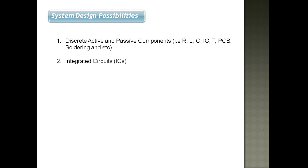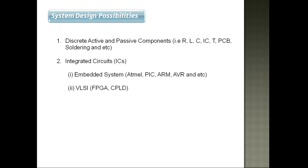In integrated circuits, we have three classifications: the first choice is embedded systems, the second is VLSI-based applications, and within VLSI we have two choices - either FPGA-based applications or CPLD/ASIC-based applications. ASIC means Application Specific Integrated Circuit, which provides a fixed circuit fabricated inside the silicon. FPGA provides a flexible or configurable circuit fabricated inside the silicon. Microcontroller-based applications provide a programmable flexible circuit fabricated inside the silicon. All of these - ASIC, FPGA, and microcontroller - come under the category of integrated circuits.